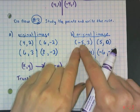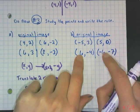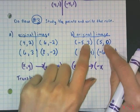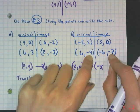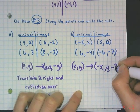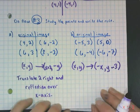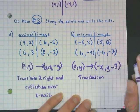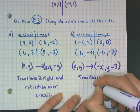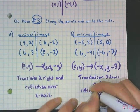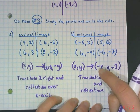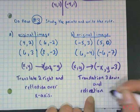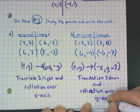For example B: X went from negative 5 to 5, and from 6 to negative 6 — so X became opposite, indicating a reflection over the Y-axis. Then Y went from 3 to 0 and from negative 4 to negative 7, decreasing by 3. So this is a translation 3 down combined with a reflection over the Y-axis.